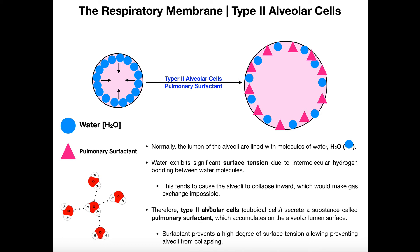What these surfactant molecules do is they sort of intercalate between the water molecules. Most of them are amphipathic, and so they accumulate in the same place that the water molecules normally do — on the lining of the lumen of the alveolus. Because of their amphipathic nature, they intercalate between the molecules of water, and what that effectively does is break the hydrogen bonding between the molecules of water.